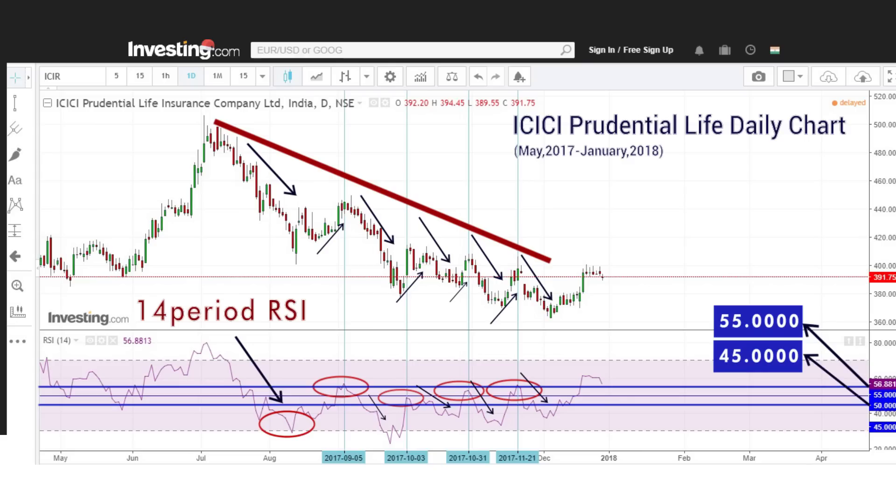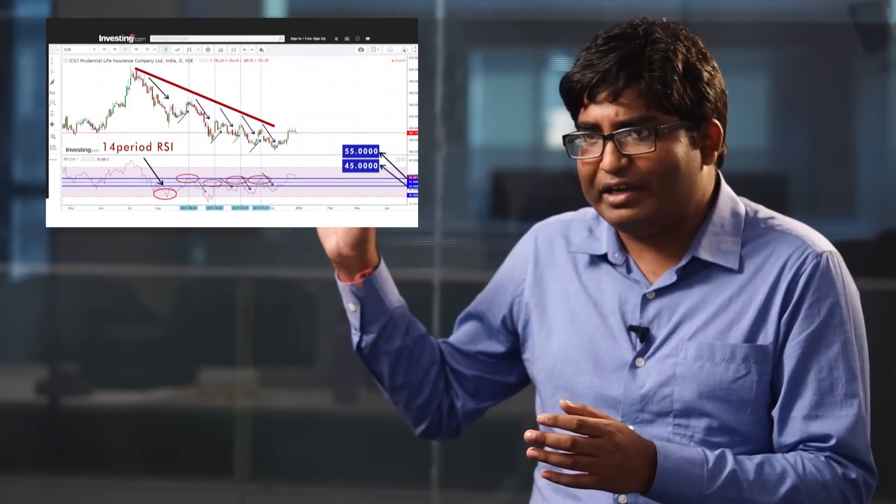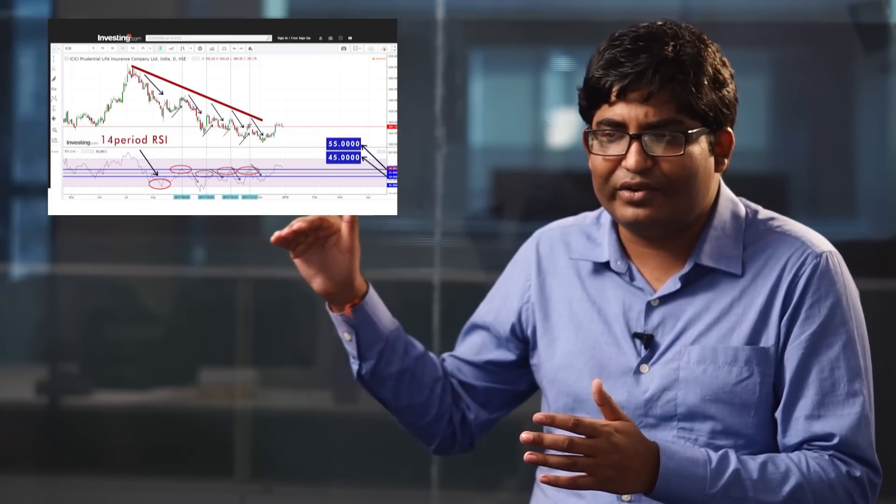So, the RSI falls. And when it comes to 45-55 level, we take a short trade thinking that if the RSI goes above 55, we will cut our trade. But, if when the RSI fell below the 45, we could see that the stock also moving much lower.